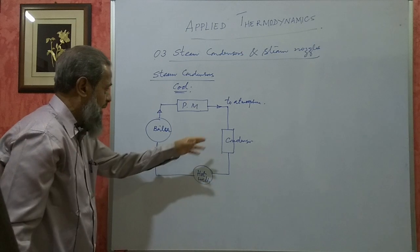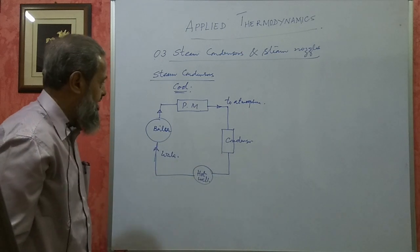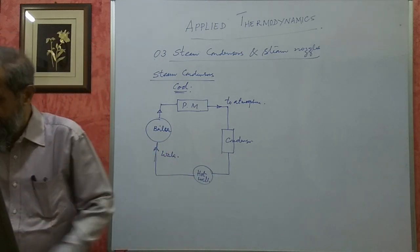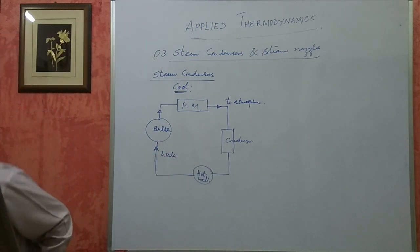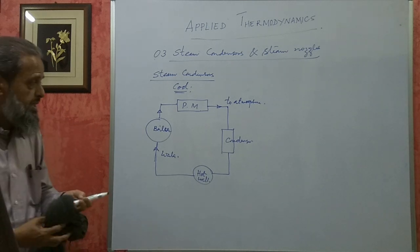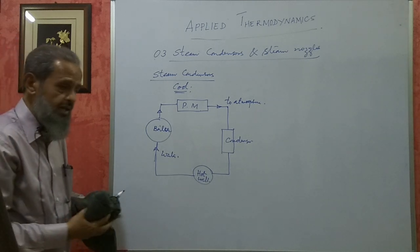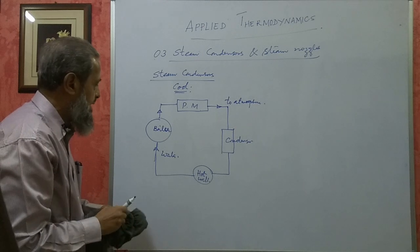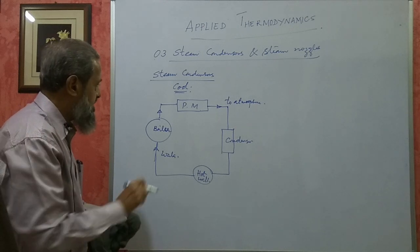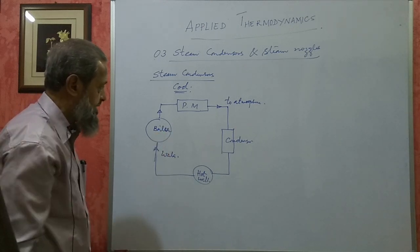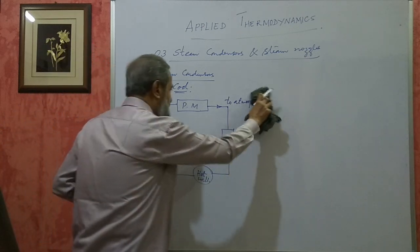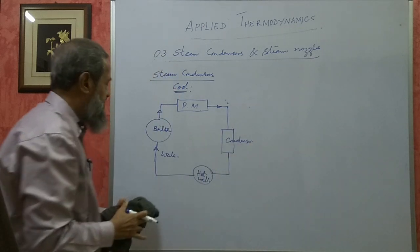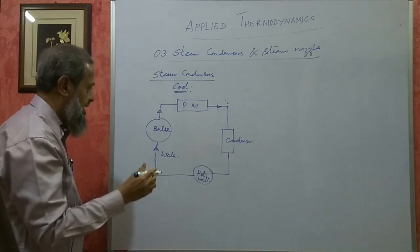If you have a condenser, it is costlier. You have to have a condenser, you have to run it, you have to have cooling towers - all required for the condensing plant and it becomes costly. When it becomes costly, there should be some advantages in using it. If you use a condenser, what are the advantages?